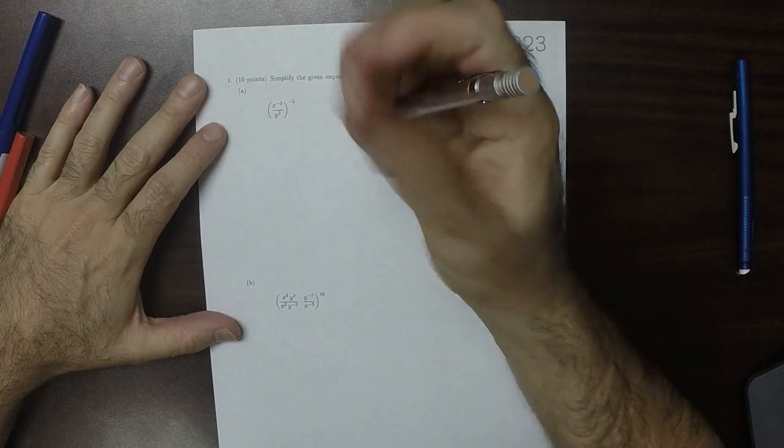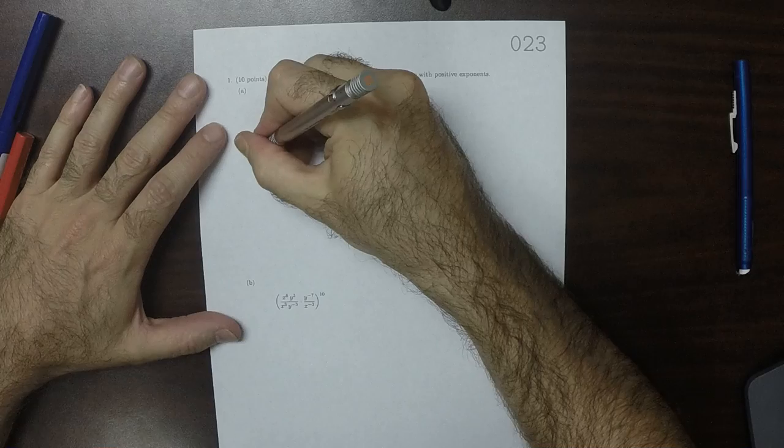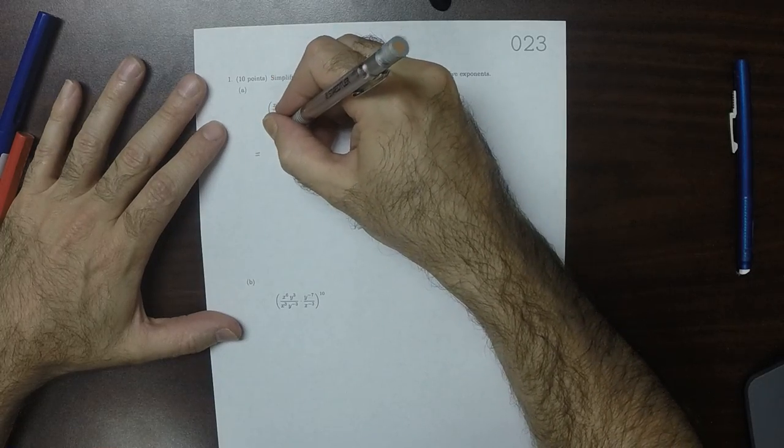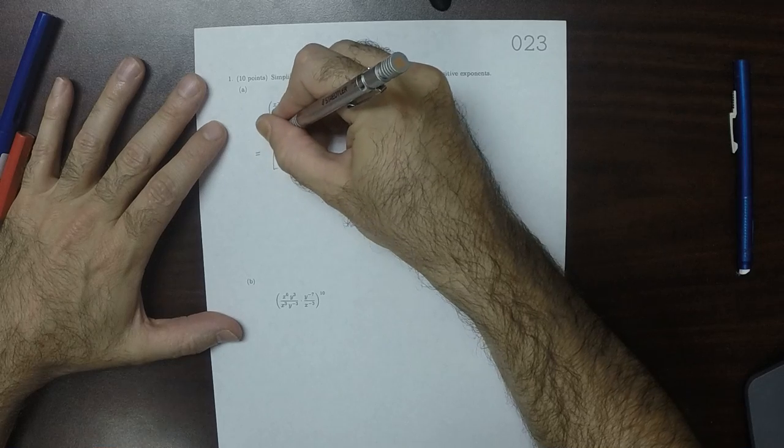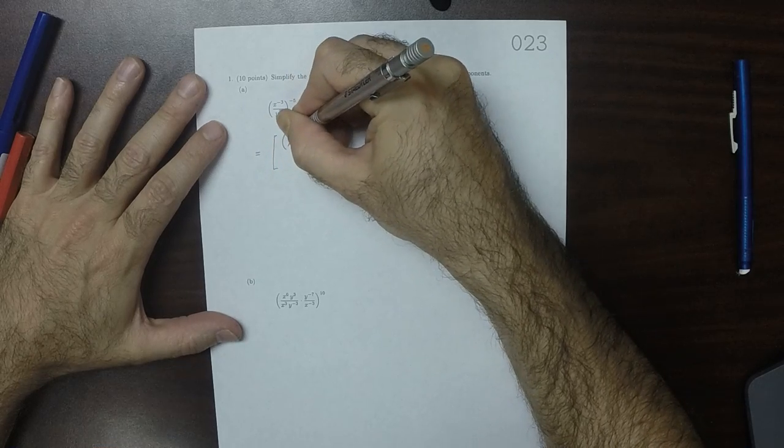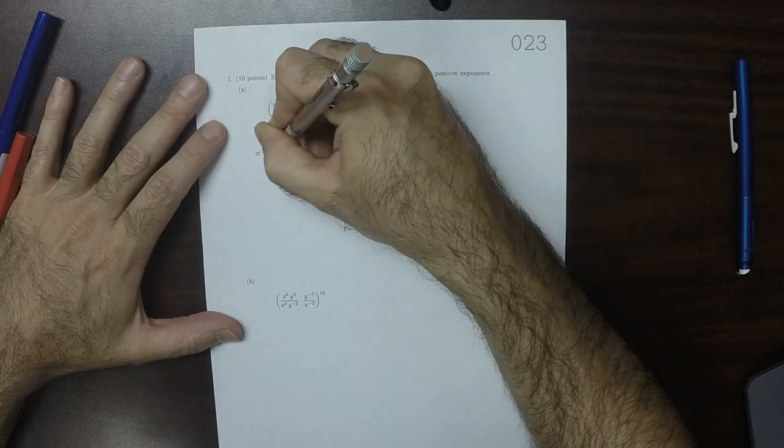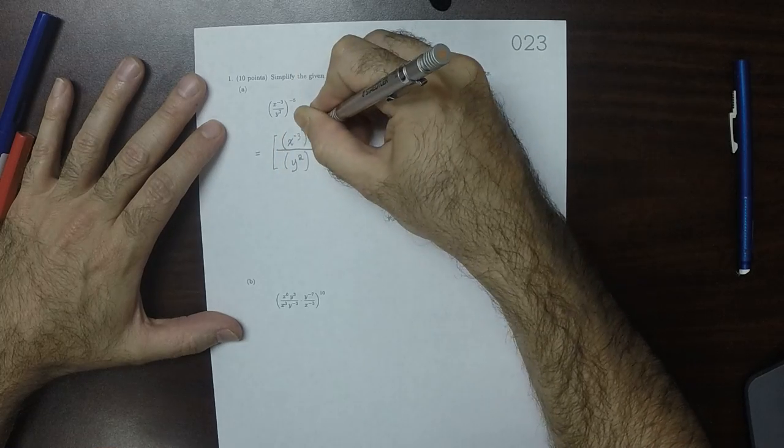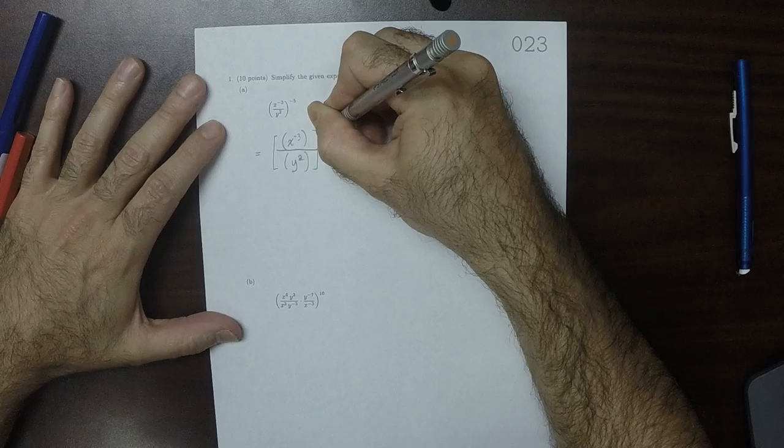So we can distribute the exponents in the following way. I'll write it like this: x to negative 3 over y to 2, to negative 5.